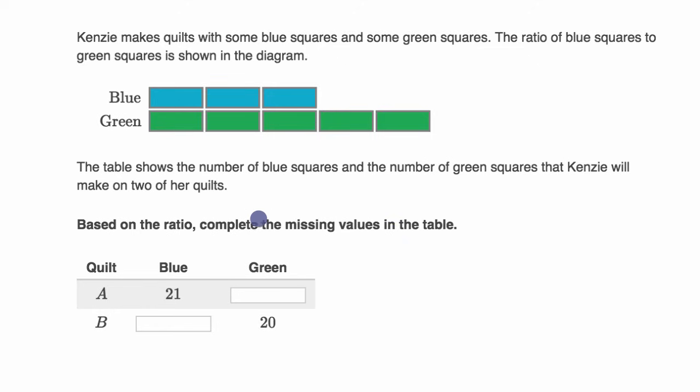Well, first let's think about the ratio of blue to green squares. For every three blue squares, we are going to have one, two, three, four, five green squares. So the ratio of blue to green is three to five. And so in quilt A, she has 21 blue squares.